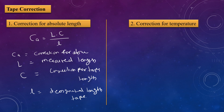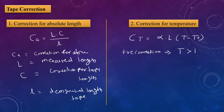The second correction is the correction for temperature. The formula is: Ct = α × l × (T − T₀). Positive correction occurs when T is greater than T₀ (rise in temperature). Negative correction occurs when T is less than T₀ (fall in temperature).